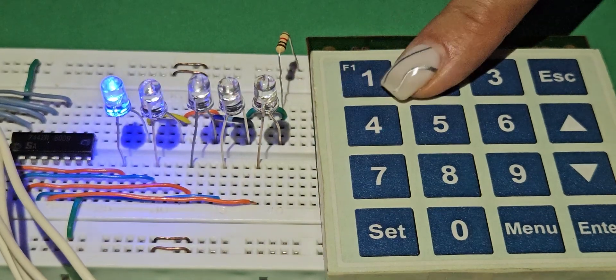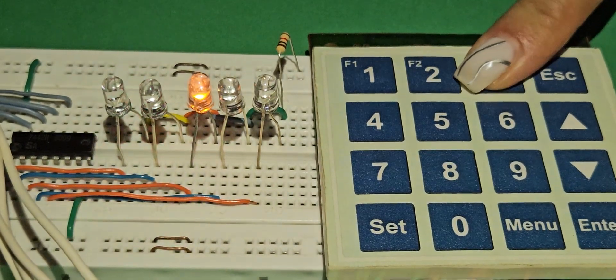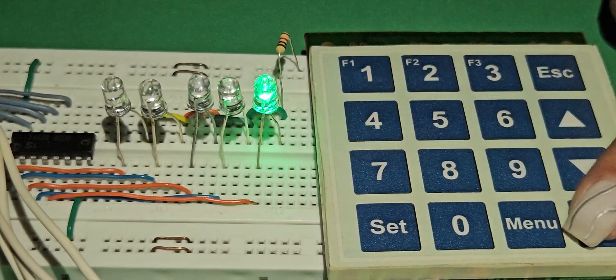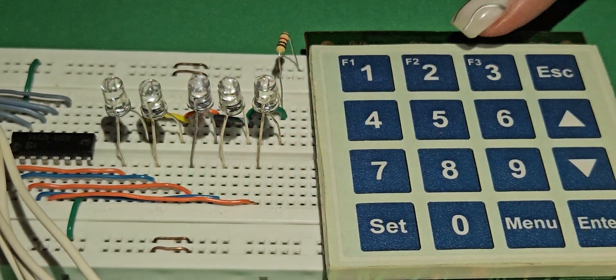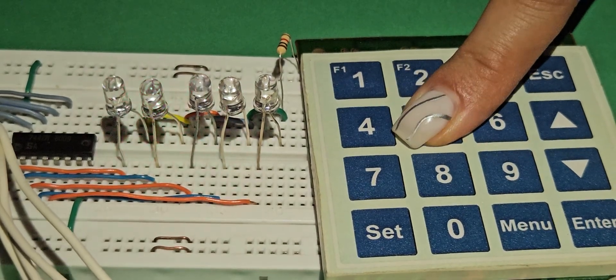Output 7442 has the ability to connect 10 LEDs, but in this video, only the first 5 outputs are connected to the LED and the other outputs are not connected, so when each of the keys 1 to 5 is pressed, the corresponding LED will turn on.